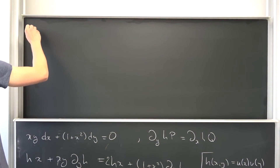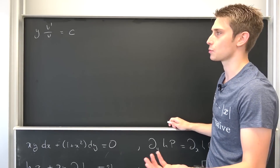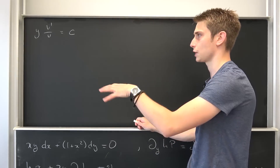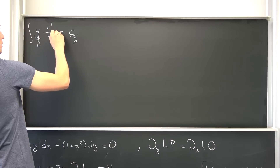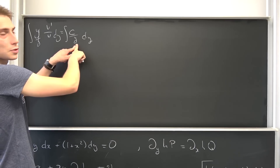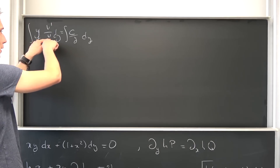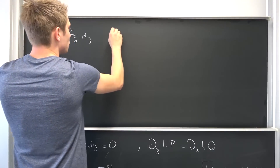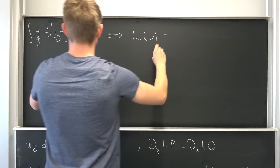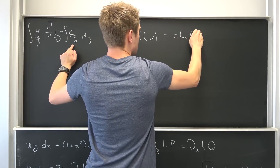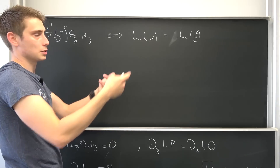Let's deal with the first one. It's a really easy one: y times v prime over v equals c. We divide both sides by y — we don't want it to be equal to zero — and then integrate both sides with respect to y. On the left side, integrating v prime over v gives the natural log of v. On the right side we get c times the natural log of y.